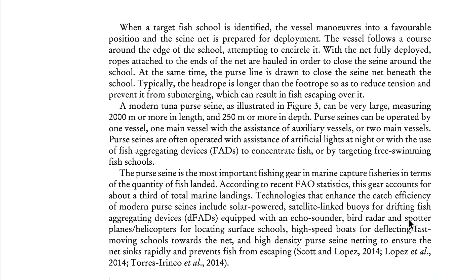When a target fish school is identified, the vessel maneuvers into a favorable position and the seine net is prepared for deployment. The vessel follows a course around the edge of the school, attempting to encircle it. With the net fully deployed, ropes attached to the ends of the net are hauled in order to close the seine around the school, while the purse line is drawn to close the seine net beneath the school.